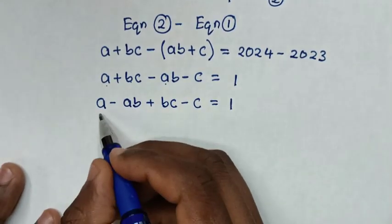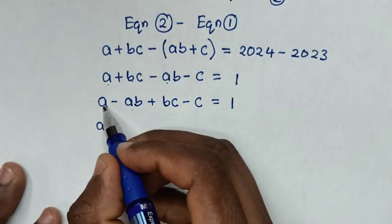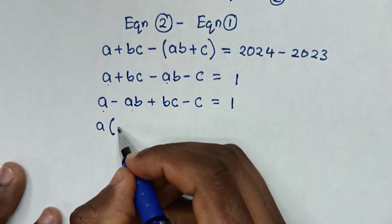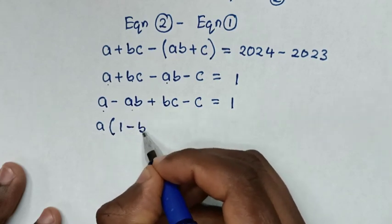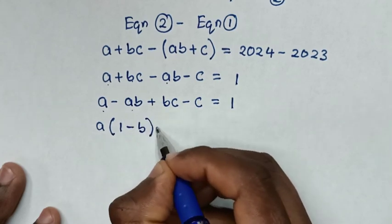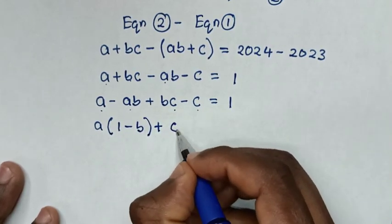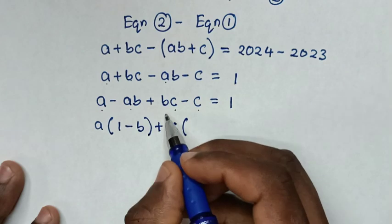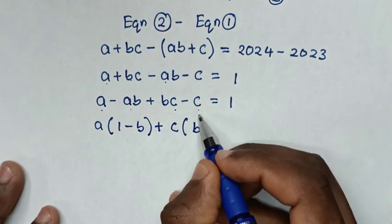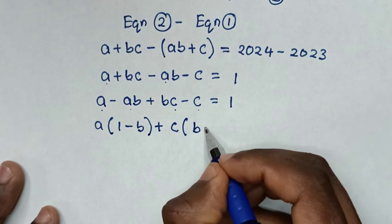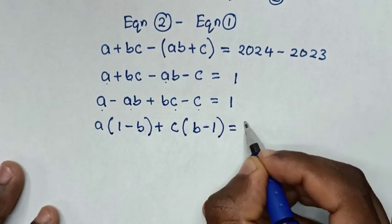Now we rearrange: A minus AB plus BC minus C equals 1. From the first two terms, A is common, so we factor out A to get A(1 minus B). From the last two terms, C is common, so we factor out C to get C(B minus 1).